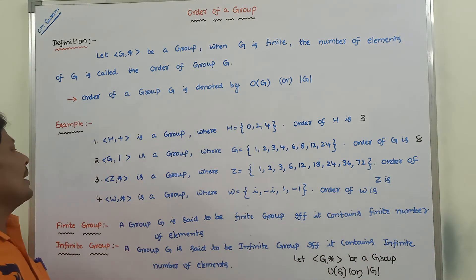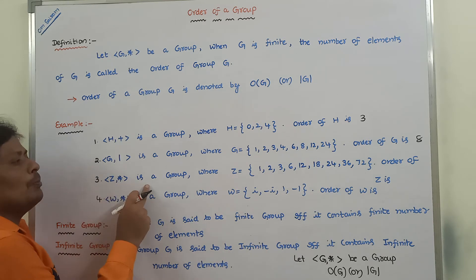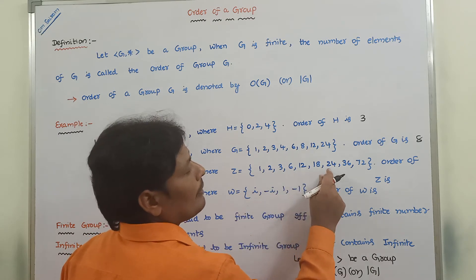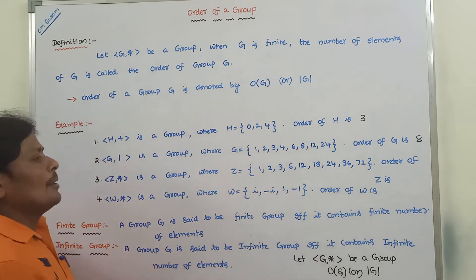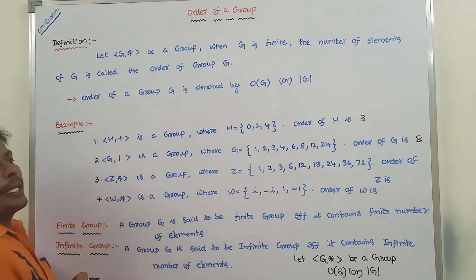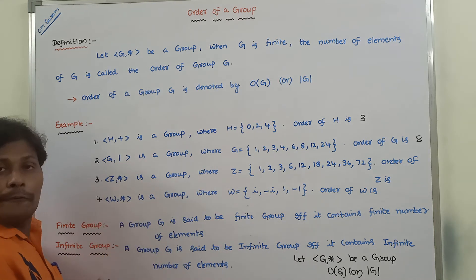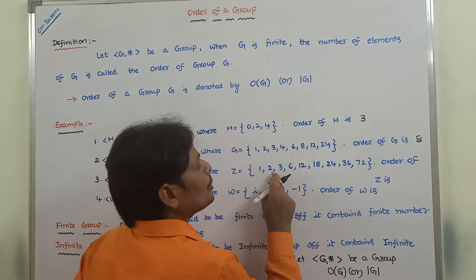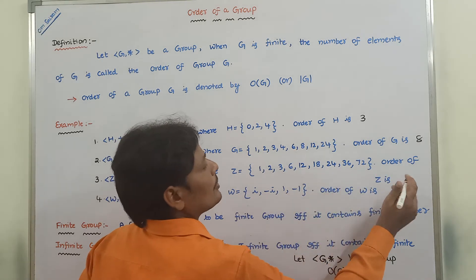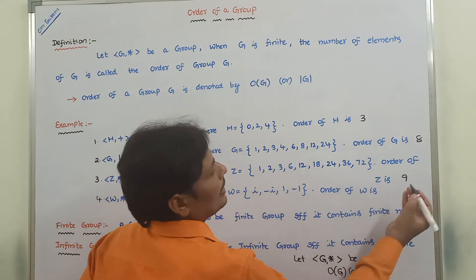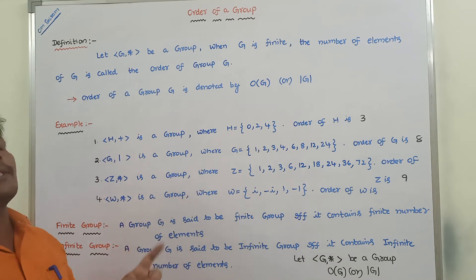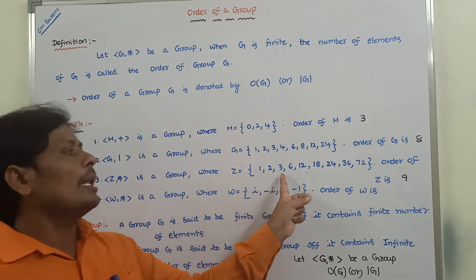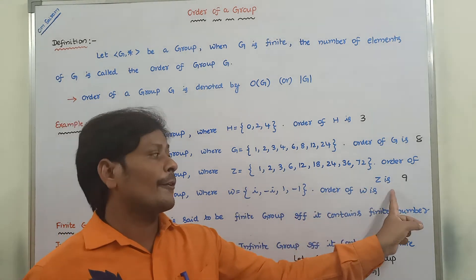Next, (Z, *) is a group where Z is equal to the set {1, 2, 3, 6, 12, 18, 24, 36, 72} with respect to the operation *. How many elements are in Z? Counting: 1, 2, 3, 4, 5, 6, 7, 8, 9 — there are 9 elements. So the order of Z is 9.